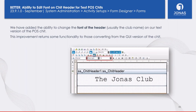We've also added the ability to edit the font on a chit header within your Point of Sale chit receipt forms. Previously this was not possible; you can now customize those headers — most likely your club name — with font editing options.